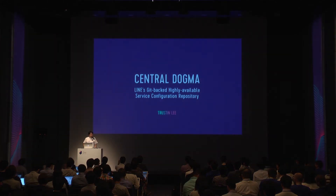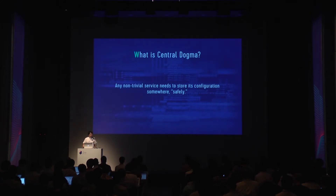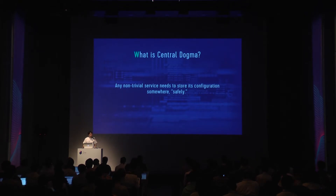Hello, nice to meet you. In this session I'm going to introduce our new project called Central Dogma. Central Dogma is a repository for storing service configurations reliably. When you build an application you want it to be configurable, like retrieving some settings from a configuration file or a centralized repository like database, Redis, ZooKeeper, or whatever. Central Dogma is our new project specialized for this specific purpose.